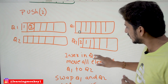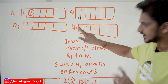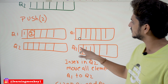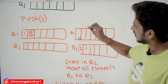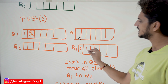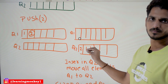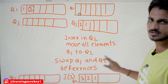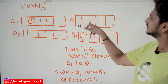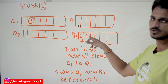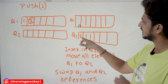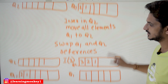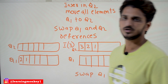One more point to understand: after inserting the new element onto queue two and moving all elements from queue one to queue two, swap the queue one and queue two references. Queue one is pointing to one area, queue two is pointing to another. After swapping, queue one should point to the new area and queue two should point to the old area.